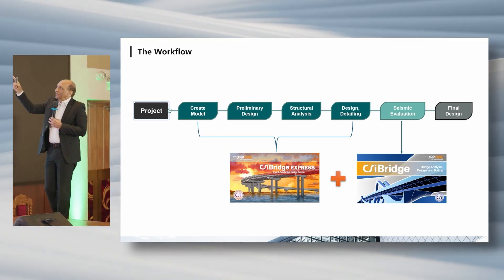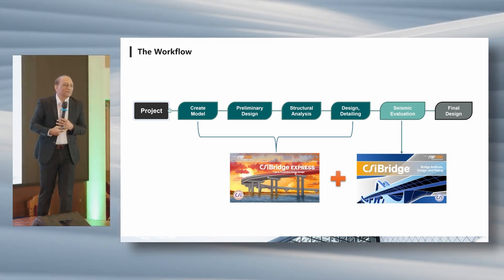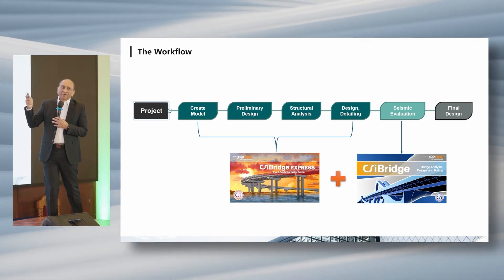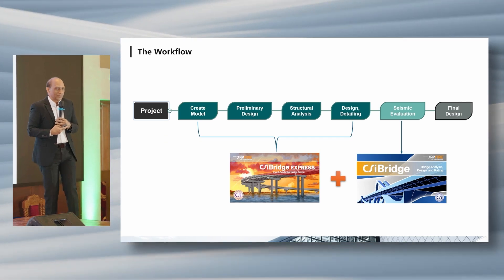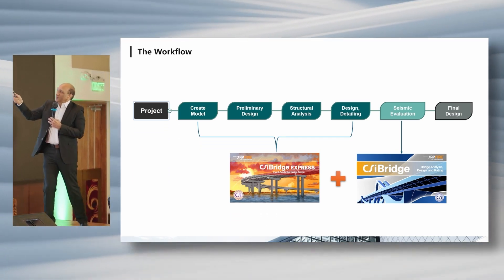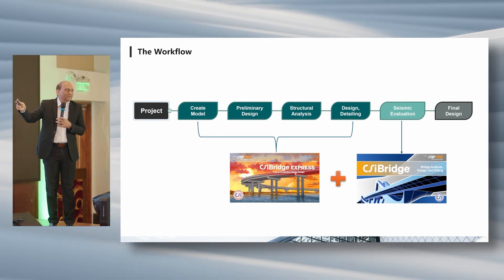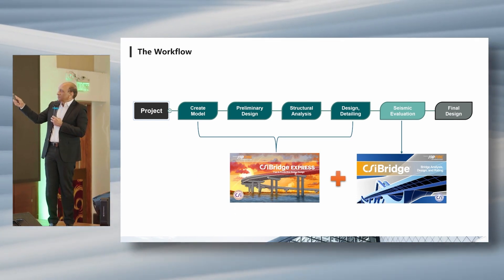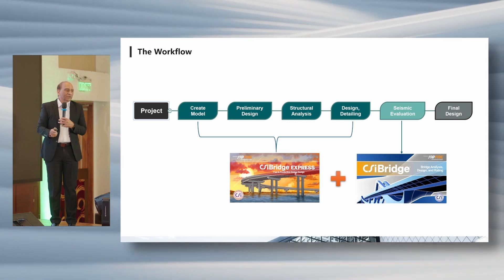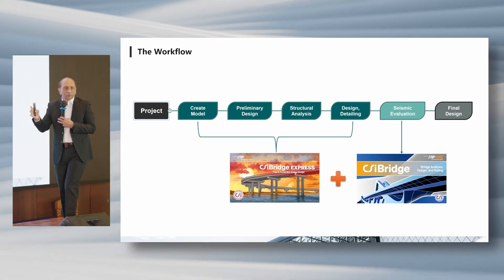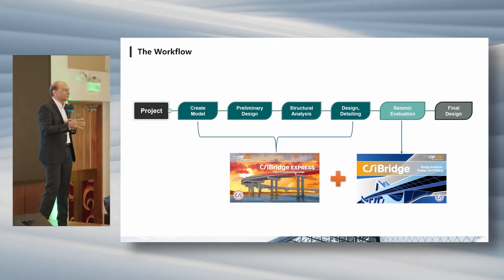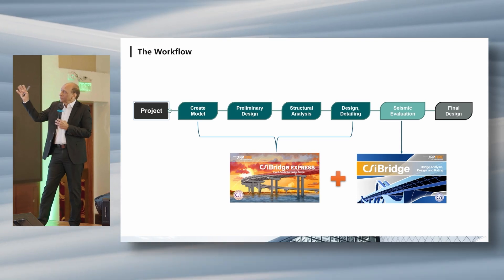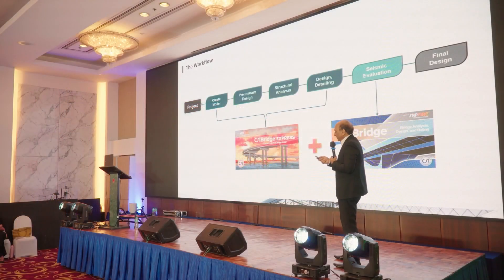We can use CSI Bridge Express because it's very easy to model — he could create this model from the DWPH drawings in 15 minutes using CSI Bridge Express. Then we transfer that model after the design to CSI Bridge Main and do the seismic evaluation. So it's a two-step approach: design first, do everything including BOQ, and once satisfied, take that output to CSI Bridge Main for seismic evaluation.